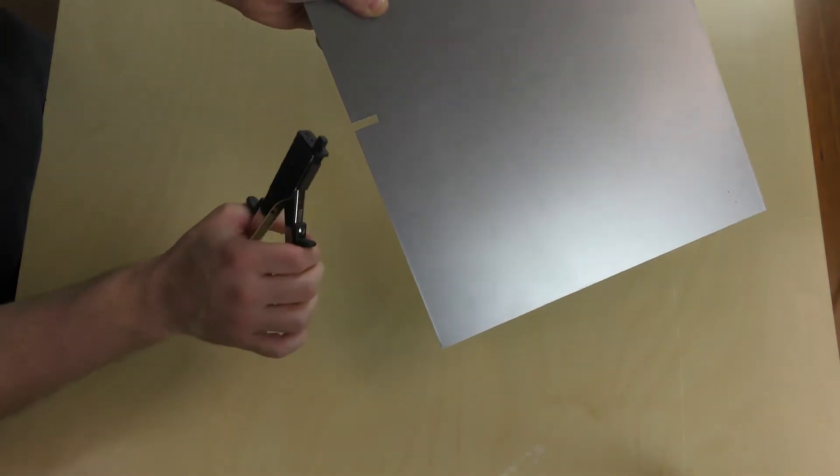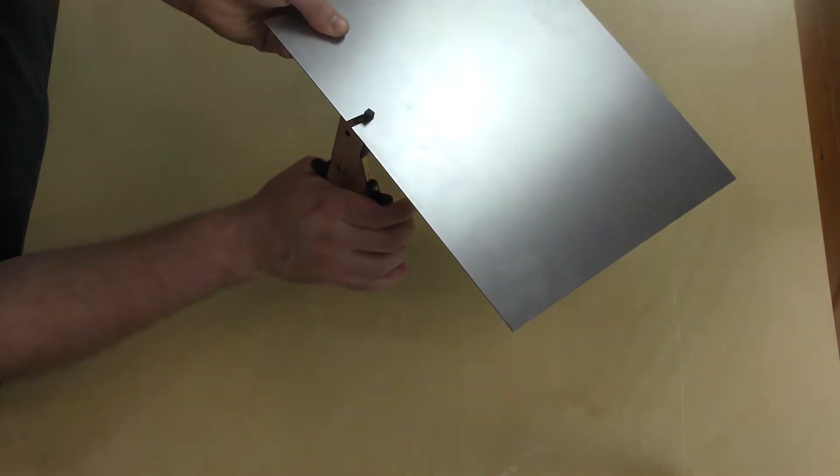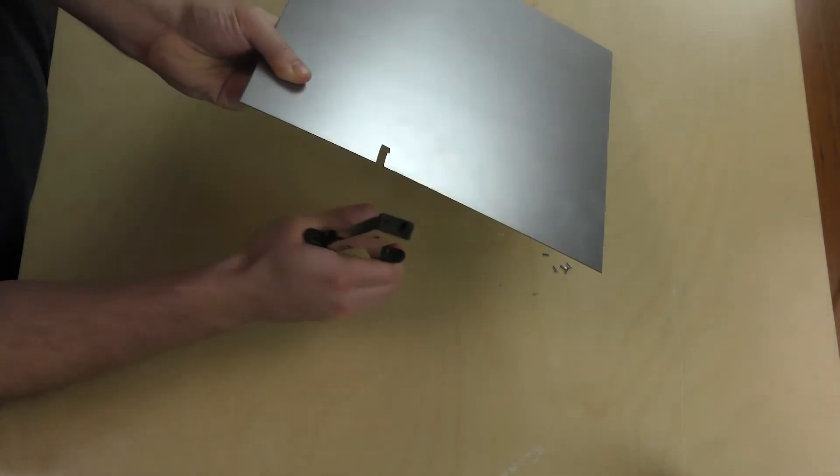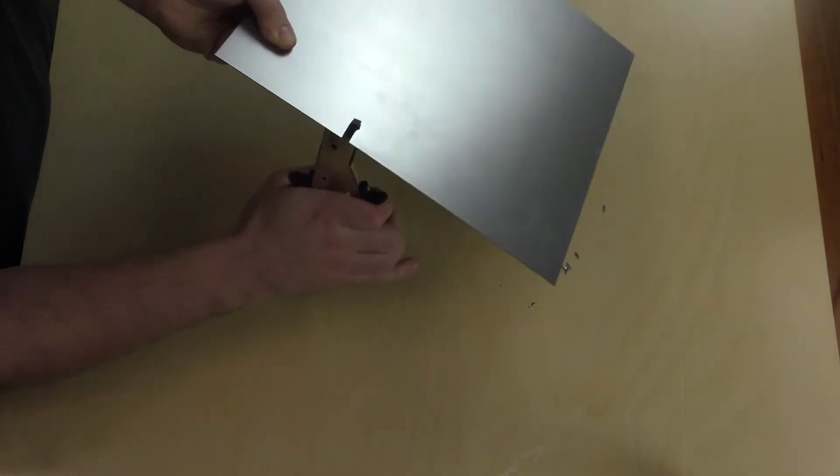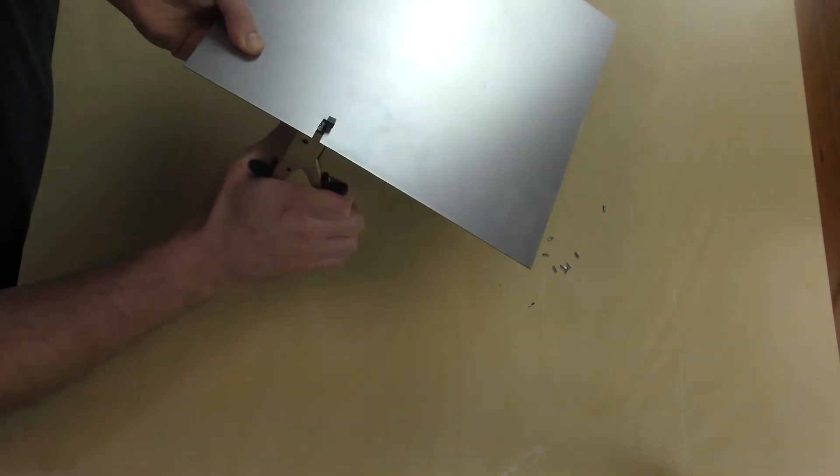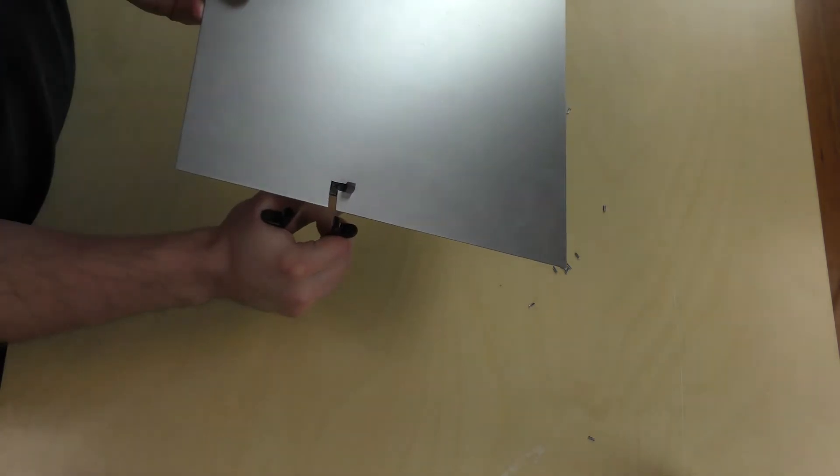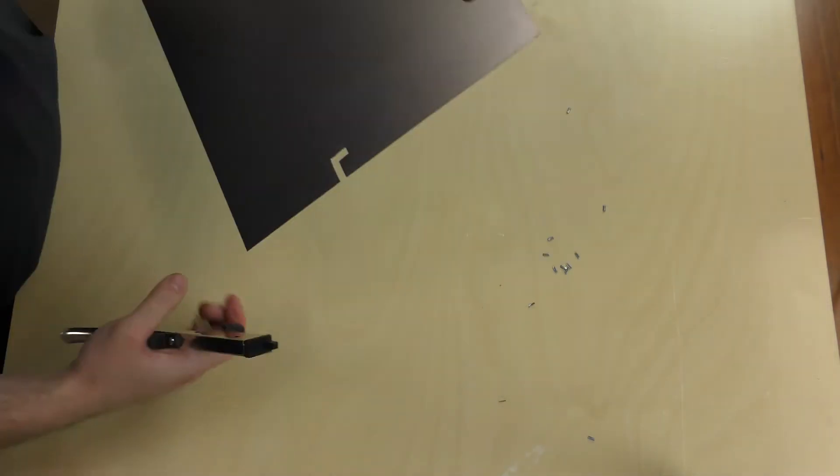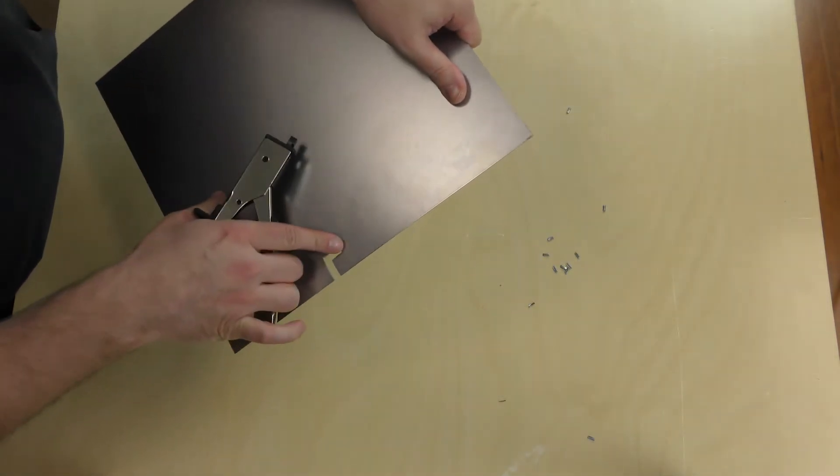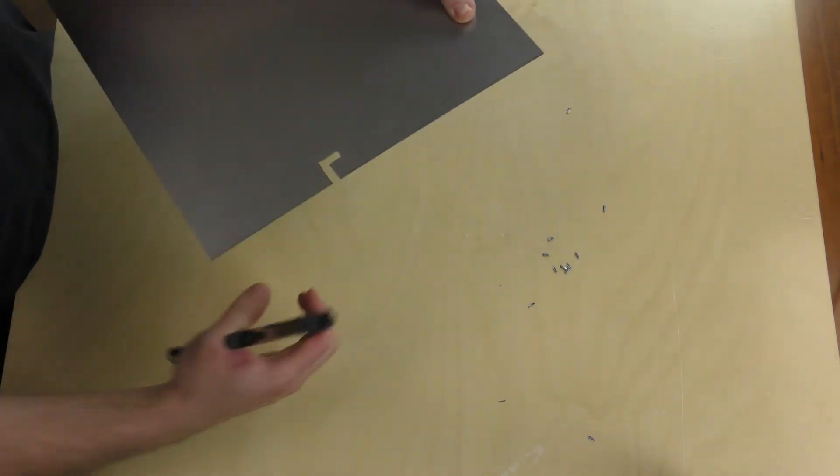To turn it, you just need to rotate the tool. Come in here and then you can start cutting this way. Then we're going to go ahead and turn it this way and finish cutting out this section right here.